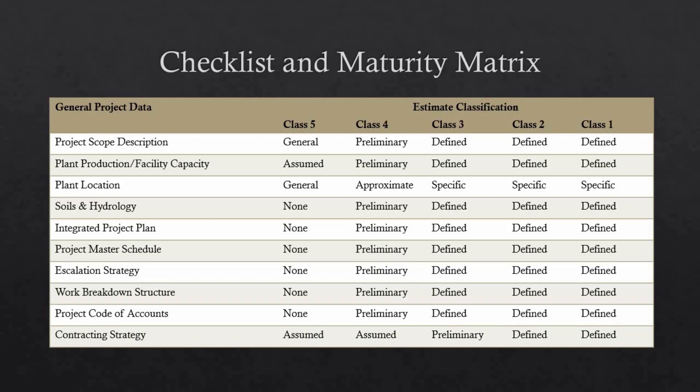The table illustrates how project maturity and data completeness evolve across AACE's five estimate classes. Data maturity grows significantly as we move from Class 5 to Class 1. Starting with Class 5, the conceptual phase, almost everything is assumed or general. In Class 3, the budget phase, critical items like scope, location, and schedules become defined — this is where projects typically secure funding. The biggest leap happens between Class 4 and Class 3, when preliminary data becomes firm. Contracting strategy gets fully defined in Class 2, since you can't finalize contracts until design is mature. Class 3 is the sweet spot for funding, while Class 1 is for dispute resolution or final bid.